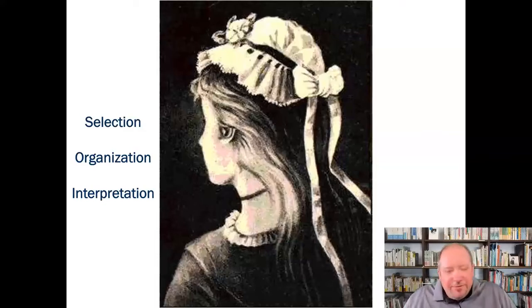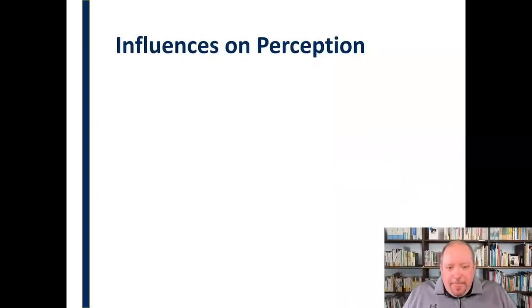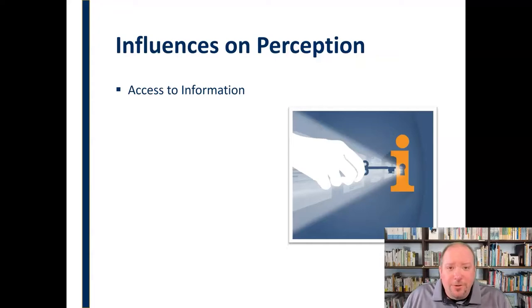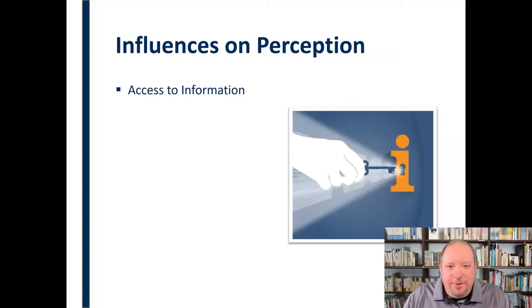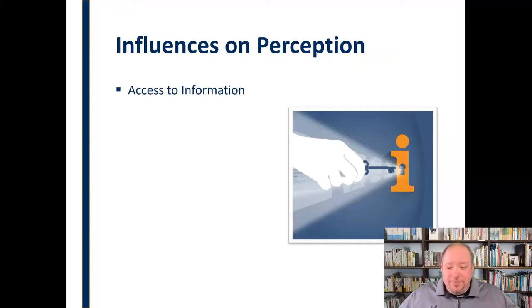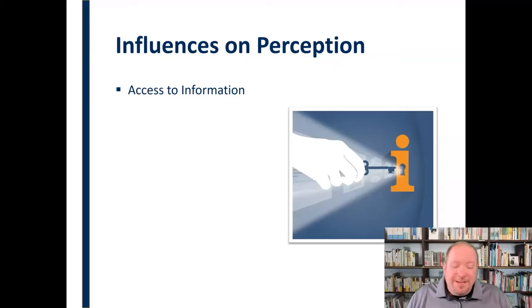Now we know the process, but where does it all come from? Let's look at some of the influences on perception. One key factor is access to information — what are you familiar with, what do you know? Things we know about tend to be less frightening. For example, if you're used to being around guns, you've been taught how to handle and fire one, you're probably not going to be as nervous around them. But if you have no experience or information about guns other than what you see in movies, that can be very scary.